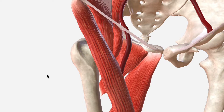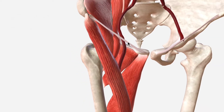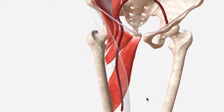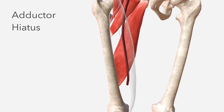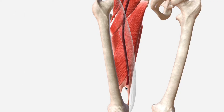Within the femoral triangle, the femoral artery is encased within the femoral sheath, which is a fascial compartment that it shares with the femoral vein. The termination of the femoral artery is at the adductor hiatus, which is the space made by the distal tendon of the adductor magnus muscle. Once it passes through this space, it becomes the popliteal artery.